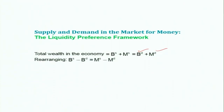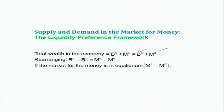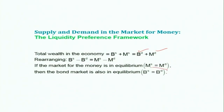Rearranging, we can see that bond supply minus bond demand equals money supply minus money demand. So if the money market is in equilibrium, the bond market is also in equilibrium, and vice versa — when the bond market is in equilibrium, the money market is also in equilibrium. This assumes only two assets, but we could expand the discussion to include stocks, durable assets, real estate, etc. For simplicity, we use only bonds and money.